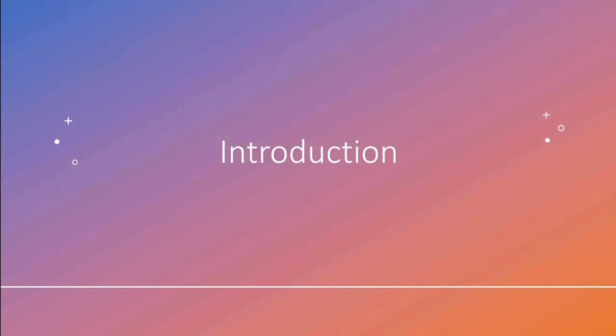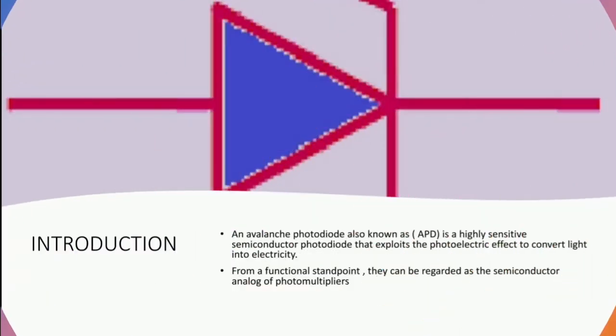So let's begin with introduction. What is an avalanche photodiode? An avalanche photodiode, also known as APD, is a highly sensitive semiconductor photodiode that exploits the photoelectric effect to convert light into electricity.